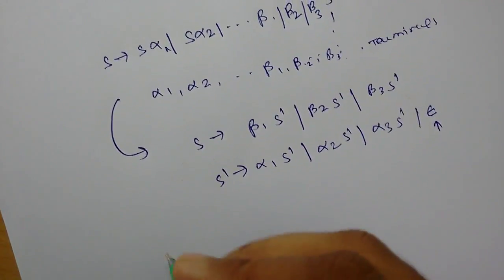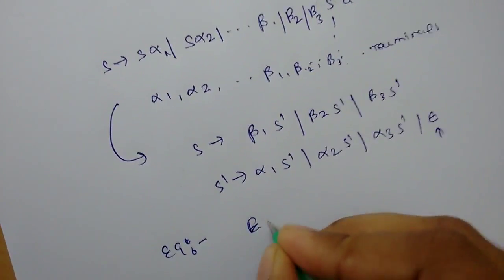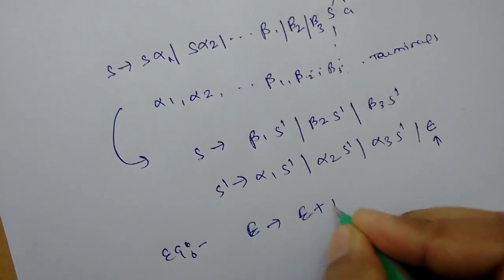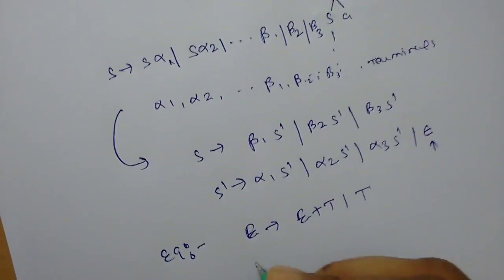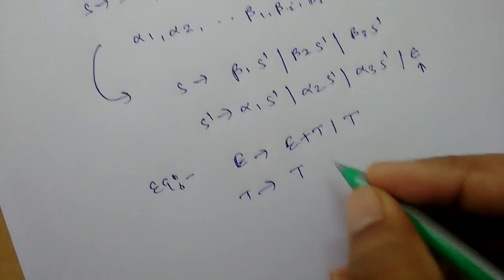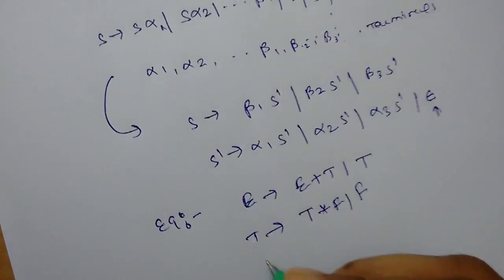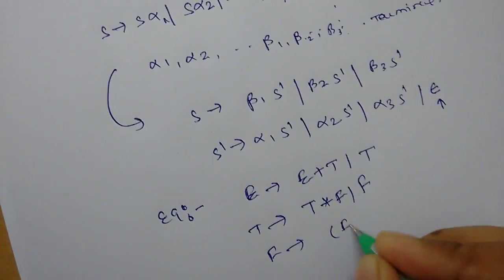Let's take an example of a left recursive grammar. E goes to E plus T or T, T goes to T star F or F, and F goes to some production.